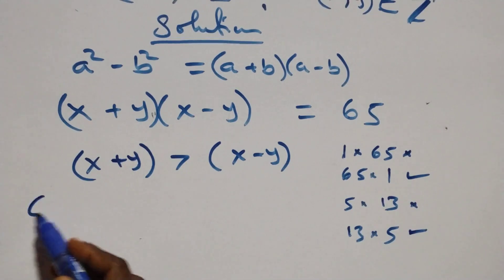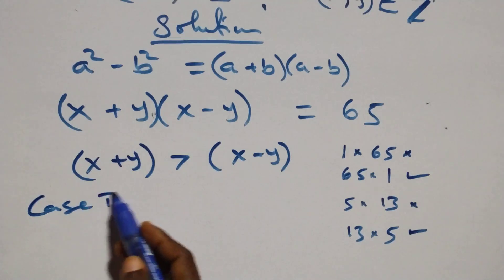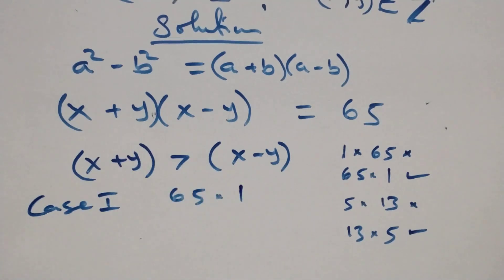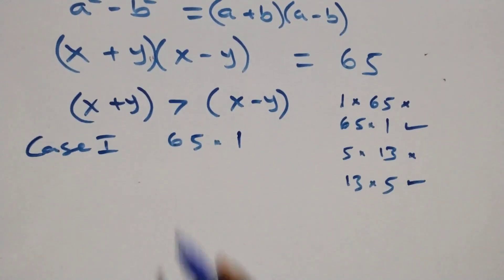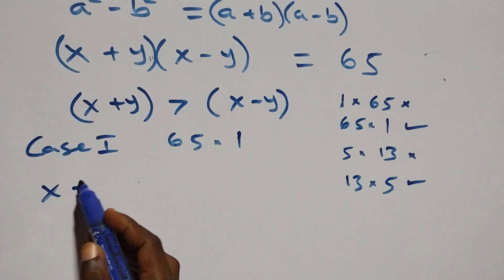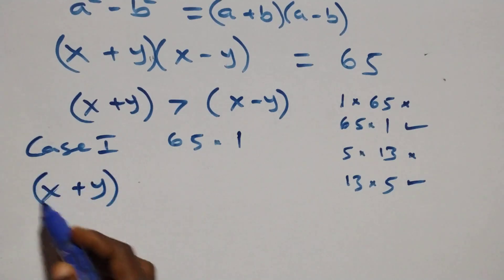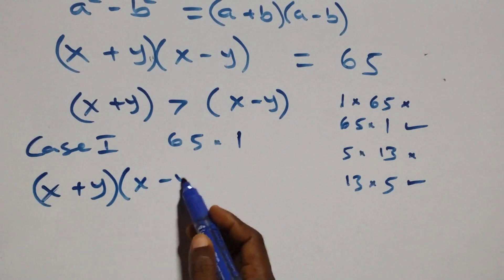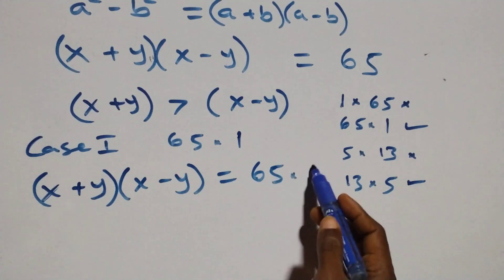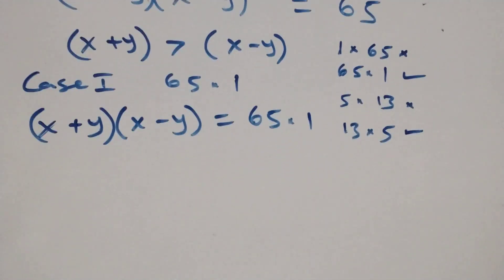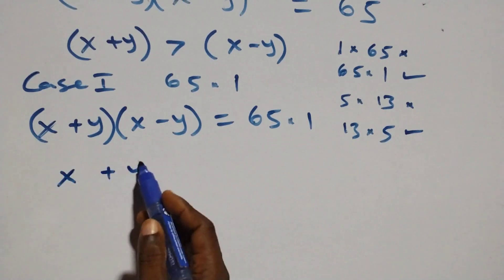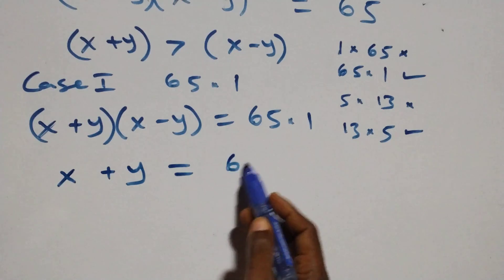For Case 1, which is 65 times 1, it implies we can write the equation as (x+y)(x-y) = 65 times 1. This means the first bracket equals 65, so x plus y equals 65.